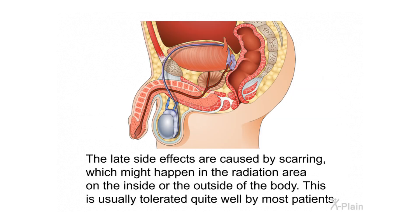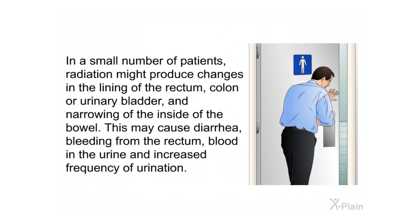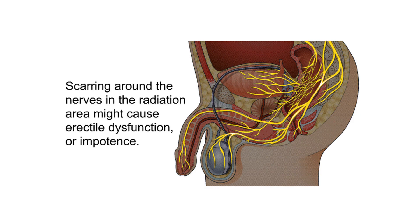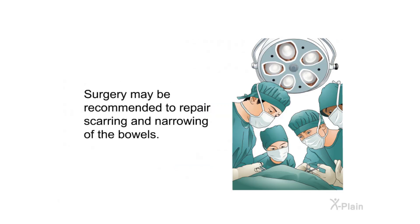The late side effects are caused by scarring, which might happen in the radiation area on the inside or outside of the body. This is usually tolerated quite well by most patients. In a small number of patients, radiation might produce changes in the lining of the rectum, colon, or urinary bladder, and narrowing of the inside of the bowel. This may cause diarrhea, bleeding from the rectum, blood in the urine, and increased frequency of urination. Scarring around the nerves in the radiation area might cause erectile dysfunction or impotence. Surgery may be recommended to repair scarring and narrowing of the bowels.